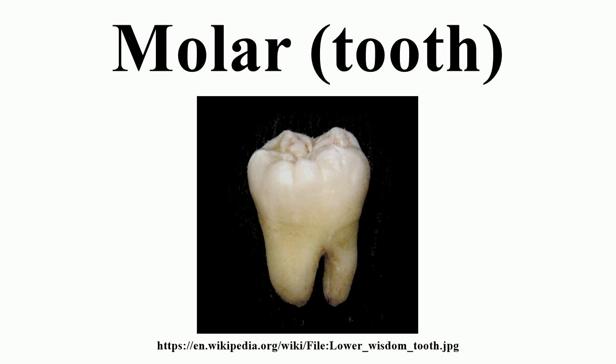Quadrate molars have an additional fourth cusp on the lingual side called the hypocone, located posterior to the protocone. Quadrate molars appeared early in mammal evolution and are present in many species, including hedgehogs, raccoons, and many primates including humans. There may also be a fifth cusp. In many mammals, additional smaller cusps called conules appear between the larger cusps; for example, a paraconule is located between a paracone and a metacone, and a hypoconulid is located between a hypoconid and an entoconid.